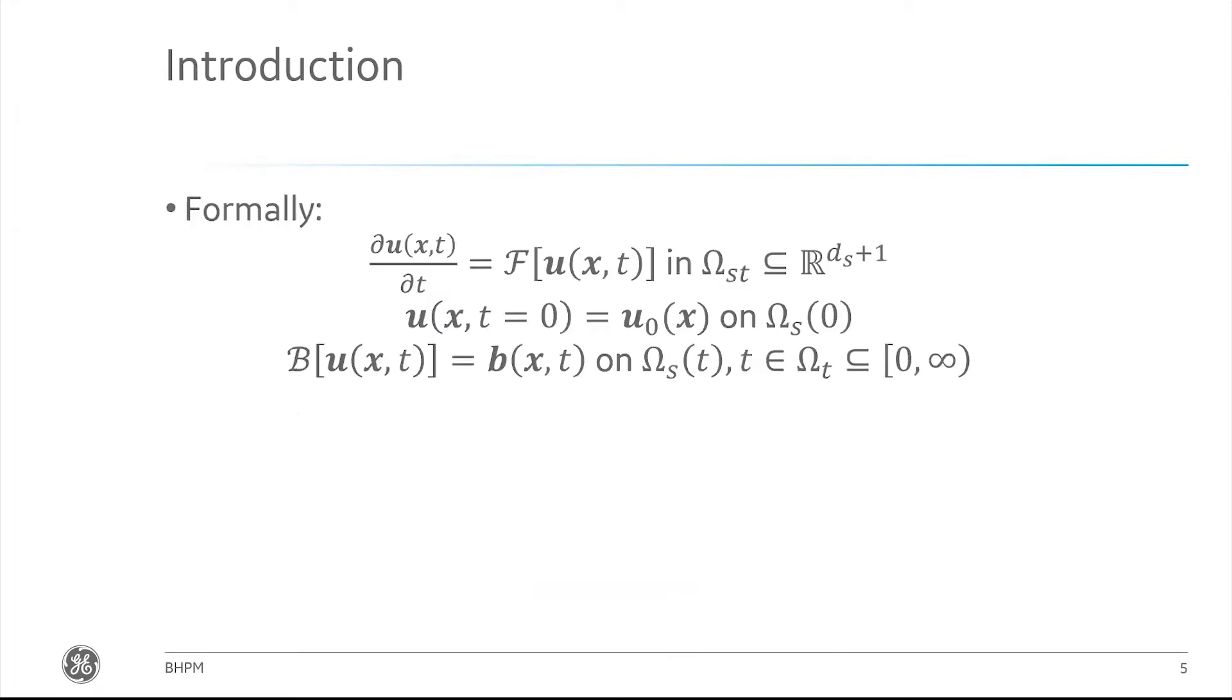To make it more formal, we're looking at problems that can be set up like this: I've got a system of partial differential equations describing the evolution of some variable U in space and time X and T, described on the right-hand side by some unknown nonlinear partial differential operator that I'm calling F. This happens in some spatial temporal domain where D sub S is my spatial dimension. I'm going to assume there are initial conditions and boundary conditions to close the differential equations.